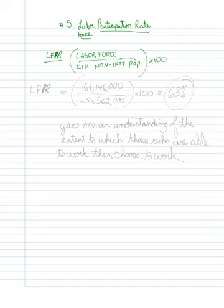that means I'd be taking 161,146,000 over 255,562,000, multiplying it by 100.